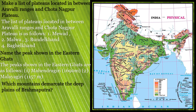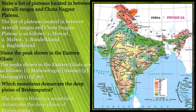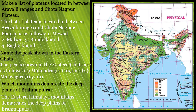Next question: which mountains demarcate the deep plains of Brahmaputra? The Eastern Himalayan mountains border this region, and the river Brahmaputra originates in Tibet and flows through here. The answer is the Eastern Himalayan mountains demarcate the deep plains of Brahmaputra.